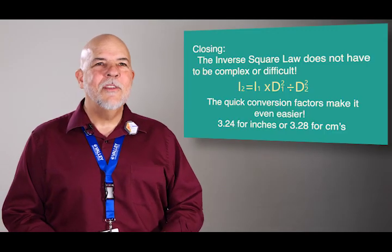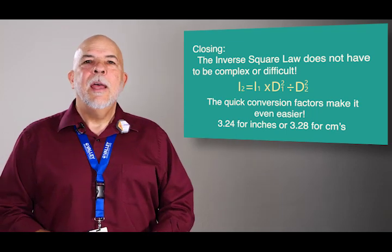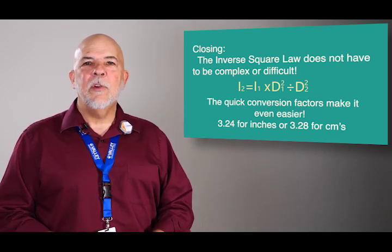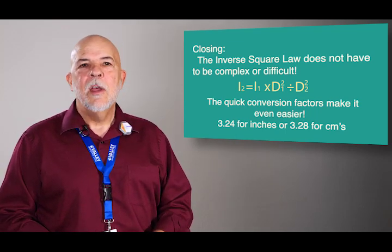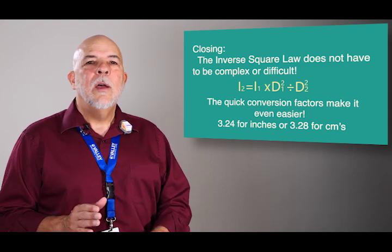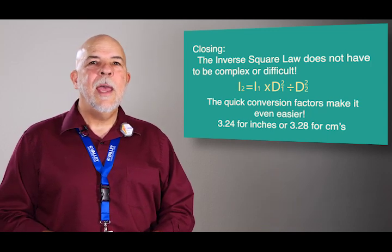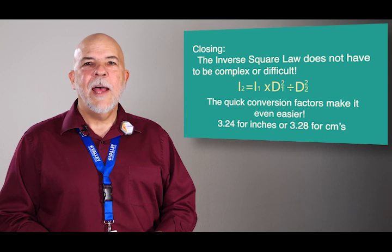The inverse square law does not have to be complex or difficult. Using our formula here, it's really simple. It's faster, it's easier, less chance of mistakes. Our quick conversion factors from 40 to 72 or 100 to 180 inches, 3.24 or 3.28, works really well, makes it faster and easier. That is the inverse square law made simple with the Penumbra Brothers, where we focus on you.